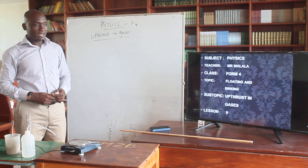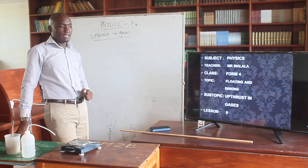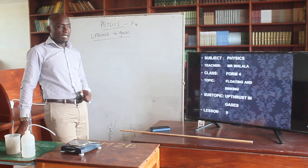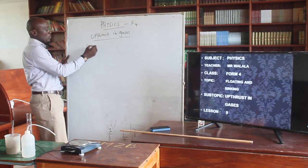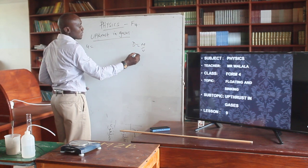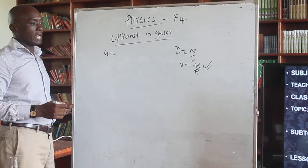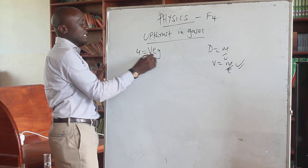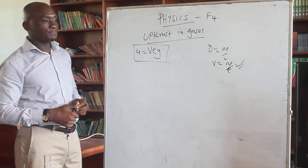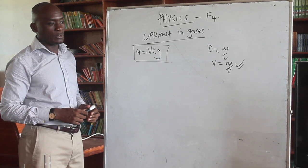Good morning boys and girls. We are back again. We were talking about upthrust of liquids and this time we will be talking about upthrust of gases under floating and sinking. Something to remind you how we find upthrust in terms of calculation: density is equal to mass over volume, so volume should be mass over density. We derived the formula for upthrust and arrived at volume times density times gravity — an upward force in both liquids and gases.